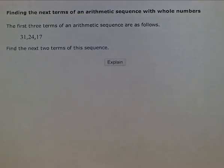So here our problem says, the first three terms of an arithmetic sequence are as follows: 31, 24, 17, and it asks us to find the next two terms of the sequence.